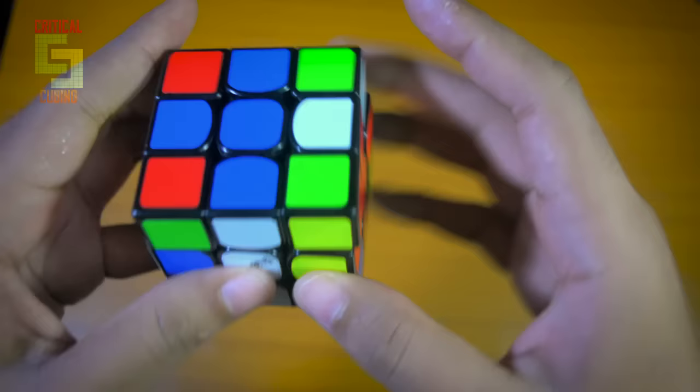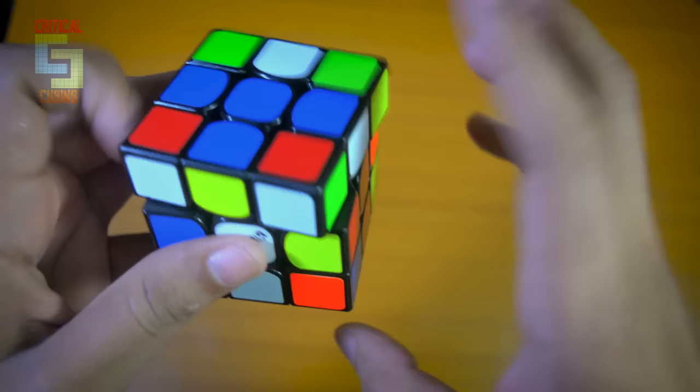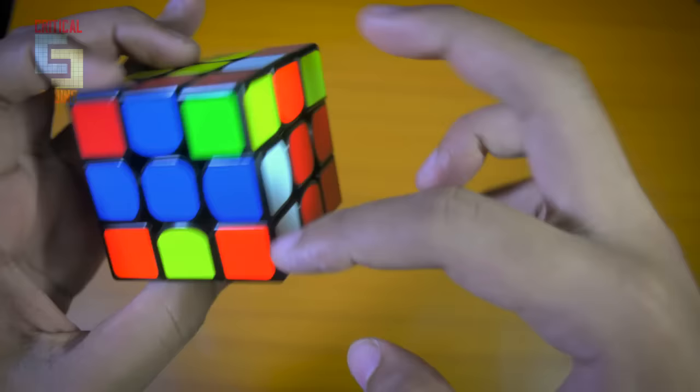So you do a rotation and a U', and then you can solve this pair by doing the three move insert R U R'.